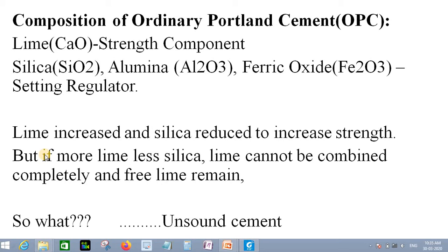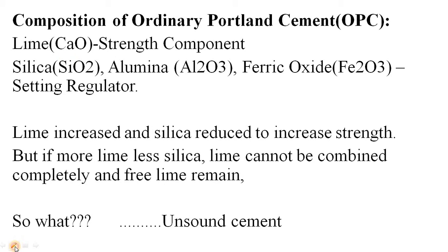In this video we will see what the actual composition of ordinary Portland cement is, and also the actual composition of the clinker. First we will see the composition of the raw material. The first and foremost raw material is calcareous material, or lime, which is the source of calcium oxide. This is one of the most important components in cement — we want cement to be able to give us strength after binding the sand and stones. Lime is the main source of strength.